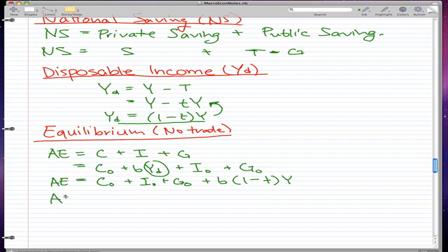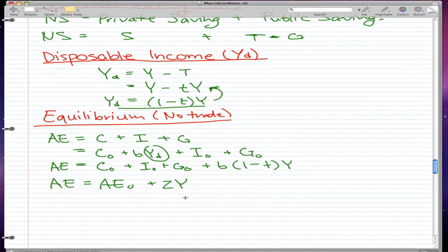Now, we also know that AE is equal to AE0 plus ZY. And this is a super familiar formula for us and we've seen it throughout all my videos. And I can tell you that for C0, I0, and G0, they are all autonomous. Well, since AE0 is also autonomous, these three factors pretty much are equal to AE0.